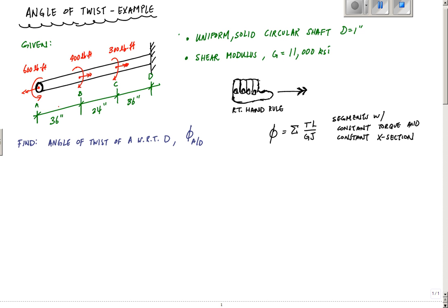In this problem we're going to calculate the angle of twist at end A on this uniform solid circular shaft which has concentrated moments at A, B, and C. It's fixed at D. The shaft is uniform and solid with a diameter of 1 inch and shear modulus of 11,000 ksi.